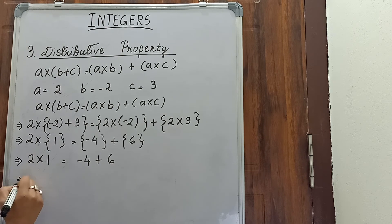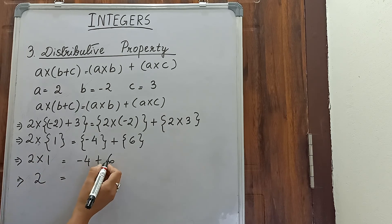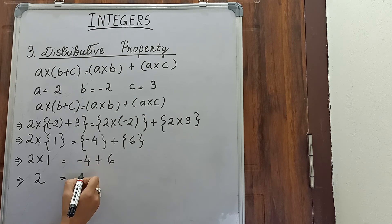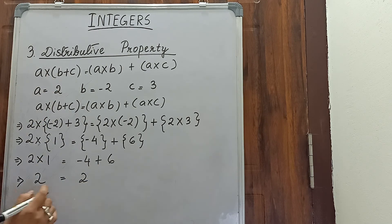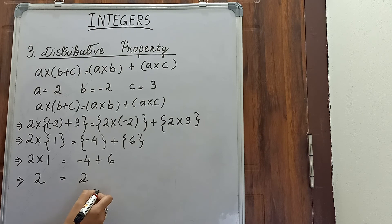We have 2 into 1 equals minus 4 plus 6: 6 minus 4 is 2 on the right, and 2 on the left. So the distributive property is proved.